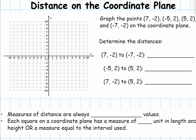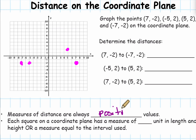Now go ahead and graph those four points on the coordinate plane: 7, negative 2; negative 5, negative 2; 5, 2; and negative 7, negative 2. When measuring distance, remember that measures of distance are always positive values. It doesn't matter if you're measuring left to right, down to up, or up to down — it's always going to give you a positive value. Each square in a coordinate plane has a measure of 1 unit, or a measure equal to the interval used. For example, if we numbered this 2, 4, 6, 8, then each box would represent 2.